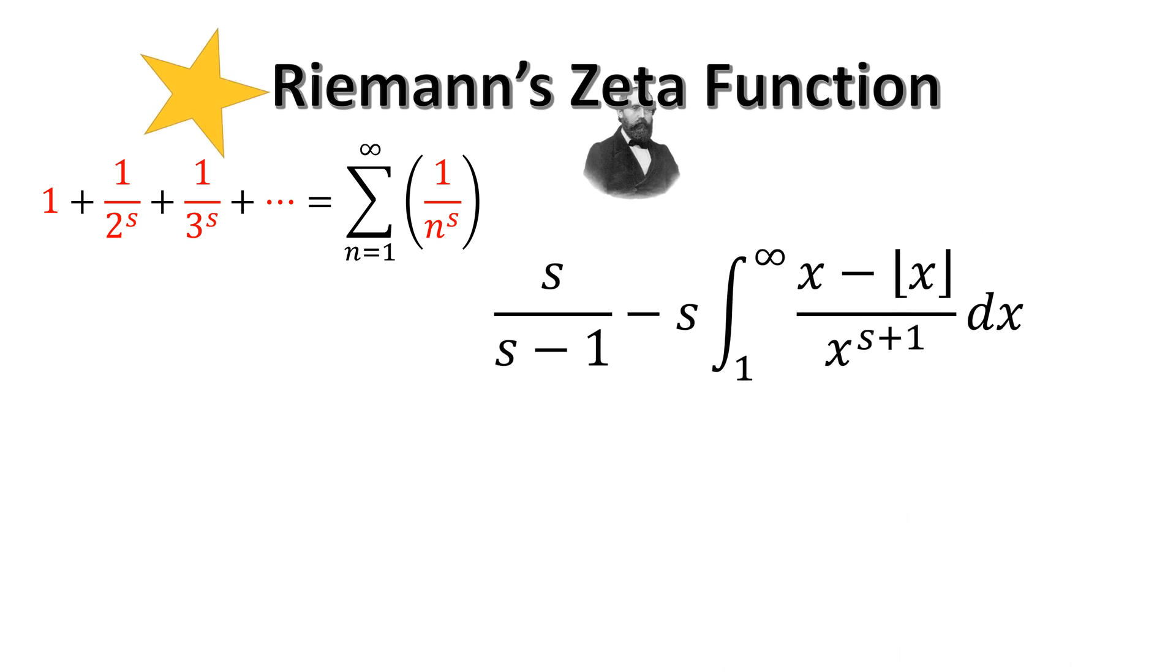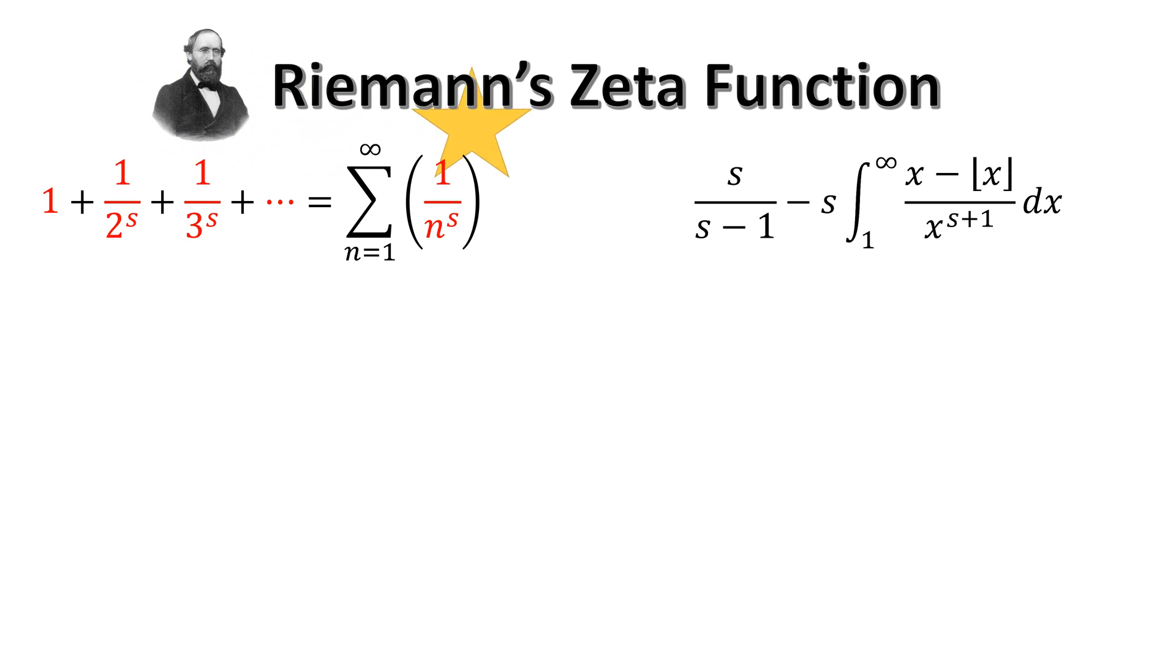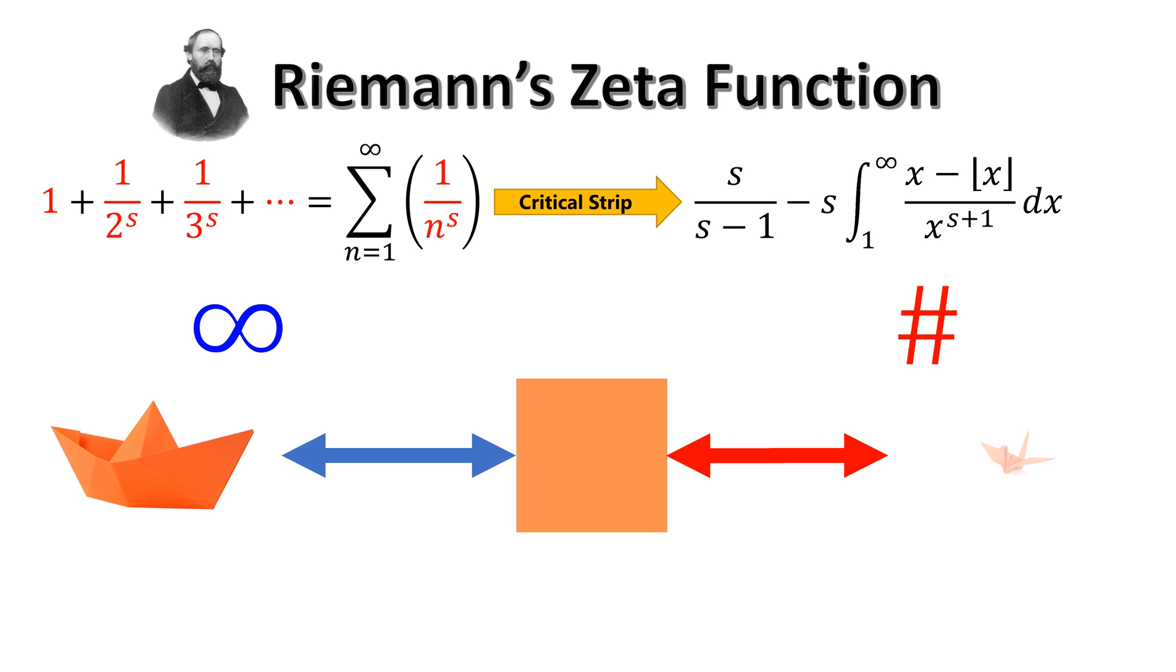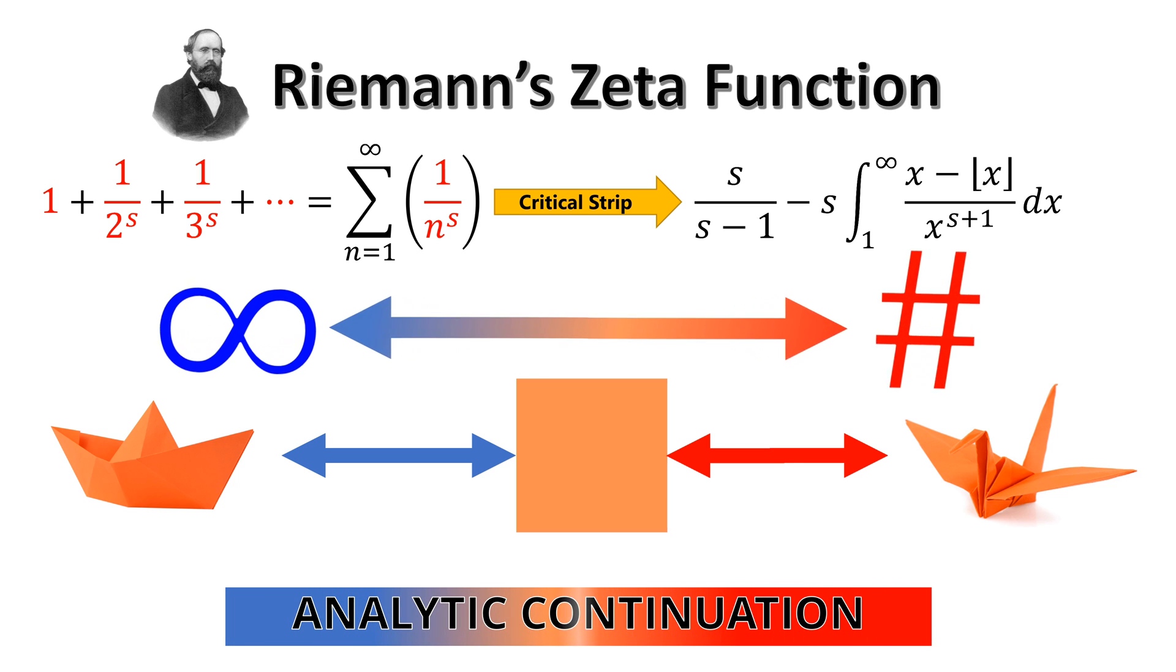He showed that many infinite values of the zeta function correspond to finite numbers in the critical strip. In some sense, it's like an origami boat that we can unfold and refold into a bird. This one-to-one correspondence process is commonly known as analytic continuation.